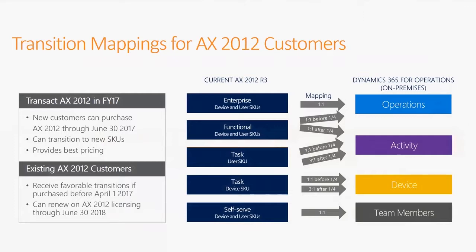It gets a little bit tricky because there are quite a few rules to attend to, but basically for AX 2012 — and basically the same rules for on-premise and cloud — you can map your users in this way. April 1st, 2017 is a deadline, so if you owned the licenses previous to that, you have better upgrade paths than if a license is purchased after that. So I think it's a pretty fair upgrade for existing customers.